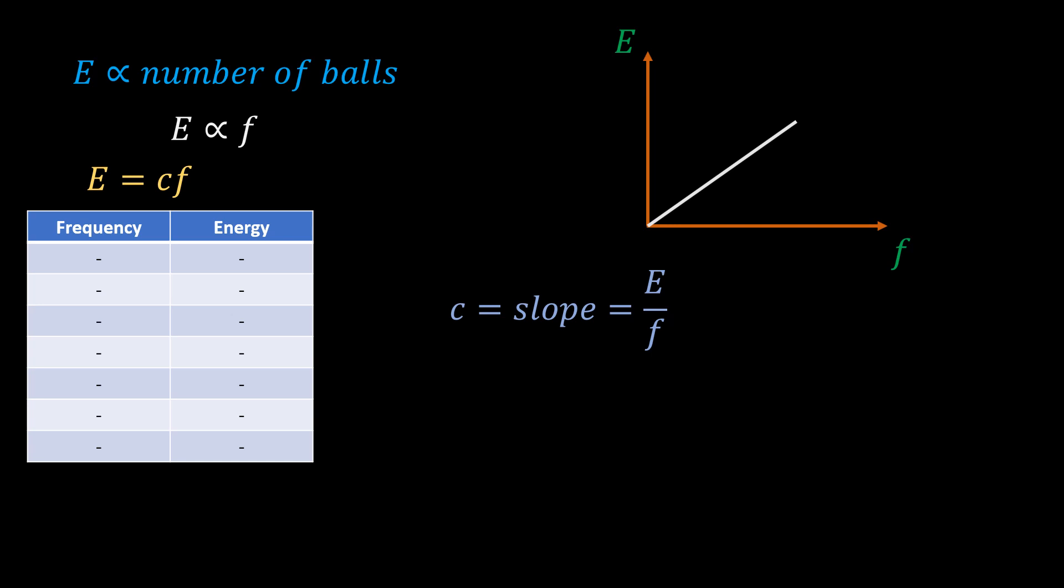The slope of this graph is equal to c. From the equation of the slope, we see that the unit of c is joules second, which is the unit of the Planck's constant. So, for EM waves, we can write E equals h f, which is the famous Planck-Einstein equation.